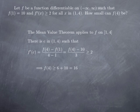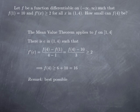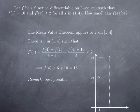So 16 is a lower bound for f(4). This is in fact the best possible bound, in the sense that there is a function that is differentiable on the real line satisfying f(1) = 10 and f'(x) ≥ 2 for all x in (1, 4), and for which f(4) is exactly 16. Indeed, if you want a function that takes the value 16 at 4 and 10 at 1, you can take the line going through these two points — it corresponds to a linear function whose derivative is the slope of the line, which is 2 for every x.